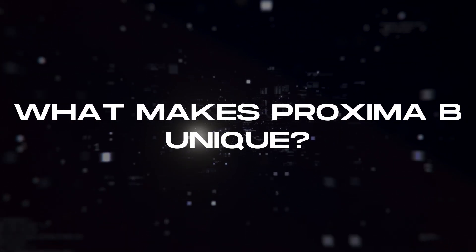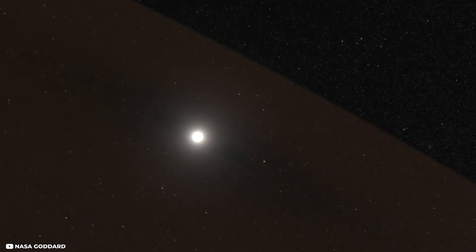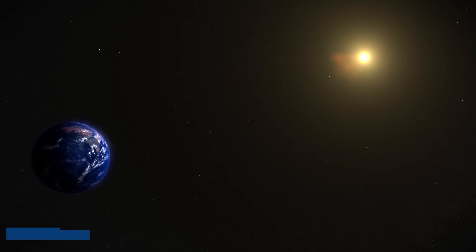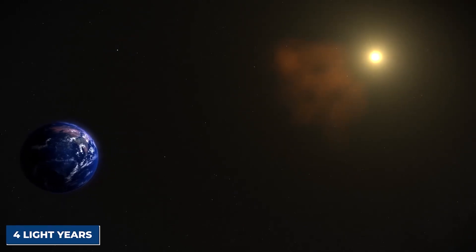What makes Proxima b unique? Considering its distance, this is the most Earth-like planet we've ever discovered. The planet is only four light years away, orbiting our closest star.